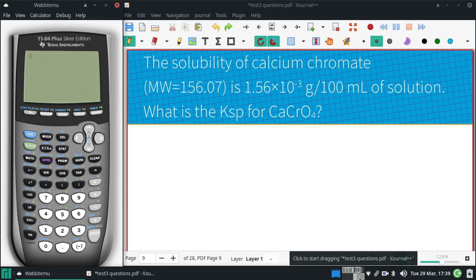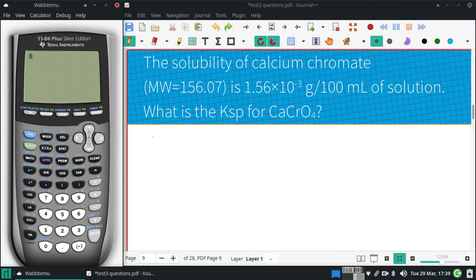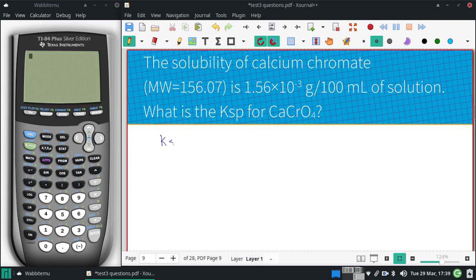The solubility of calcium chromate, given the molecular weight there, is 1.56 times 10 to the negative third grams for every 100 milliliters. We want to use that to figure out the Ksp of calcium chromate.